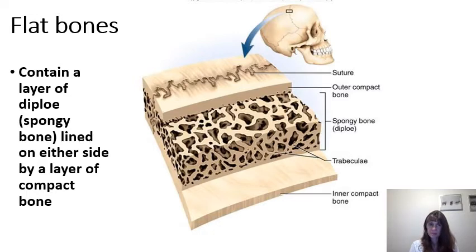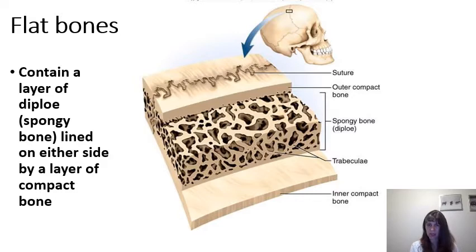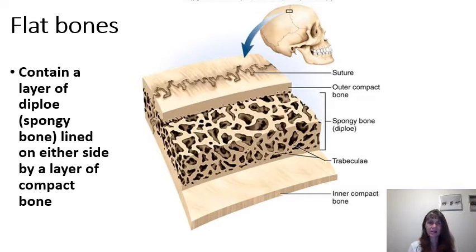The flat bones of the skull contain a layer of spongy bone that has a special name — diploe. The diploe is lined on either side by a layer of compact bone.